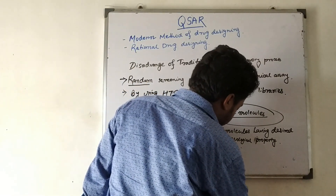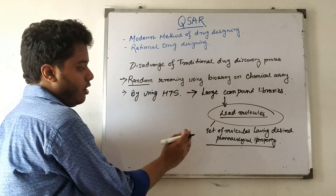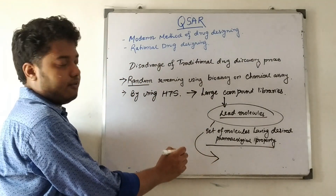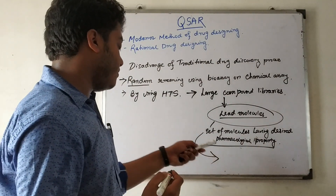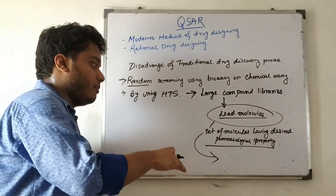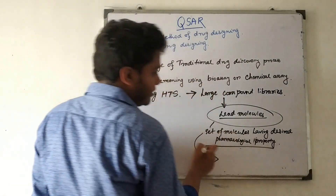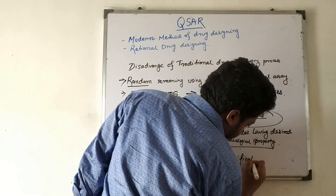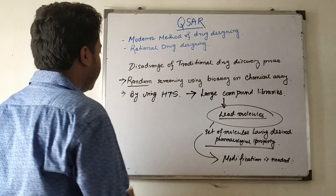The development of lead molecules is the first step of drug design. Lead molecules are later modified by checking their pharmacological and physicochemical properties, such as solubility and compatibility with the bio phase. This first step requires further modification before the drug can progress.